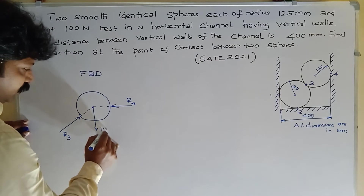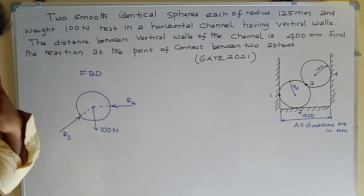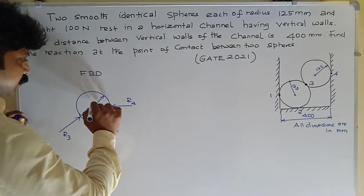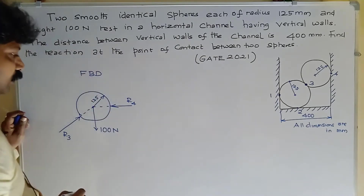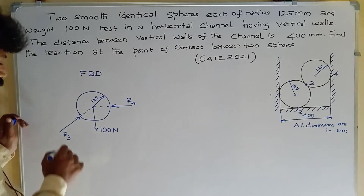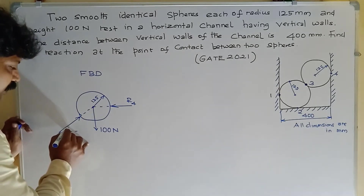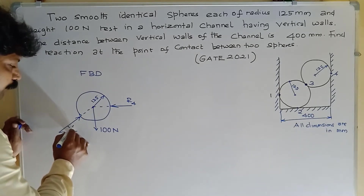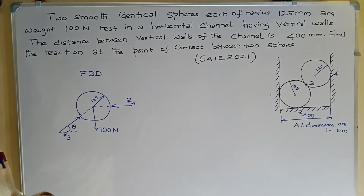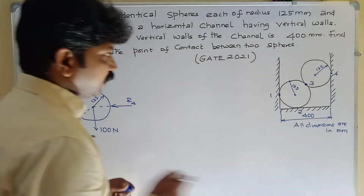The weight is 100 Newton and the radius is 125 mm. The unknown value is the inclination of R3 with the horizontal. How to find that angle theta? See from the diagram.